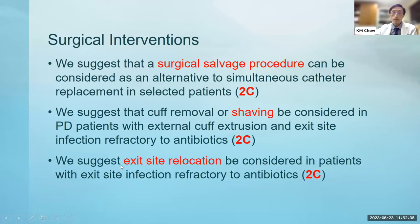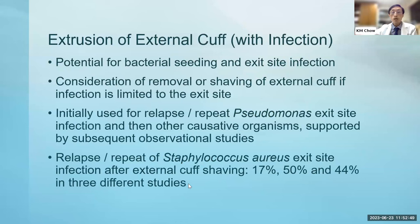We recommend simultaneous removal and reinsertion to be avoided when there is deep cuff involvement or concurrent peritonitis. We also suggest that surgical salvage procedures can be considered as an alternative to simultaneous catheter replacement in selected patients. For example, cuff removal or cuff shaving can be considered in patients with external cuff extrusion and exit site infection refractory to antibiotics (grade 2C). We also suggest exit site relocation to be considered in patients with exit site infection refractory to antibiotics (grade 2C). Relapsed Staphylococcus aureus exit site infection after external cuff shaving was reported in only about 30-50% of cases across three different studies.